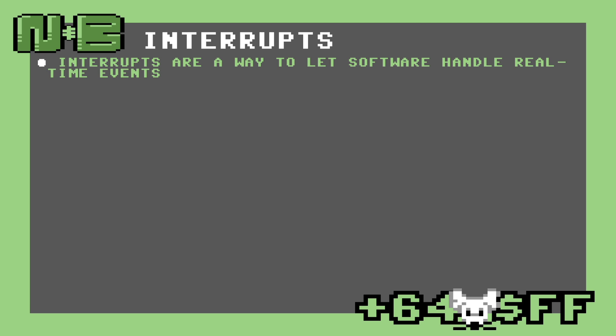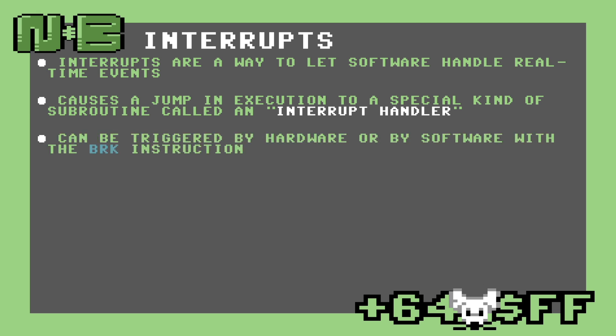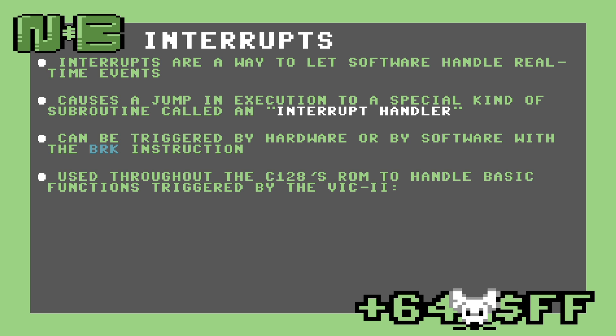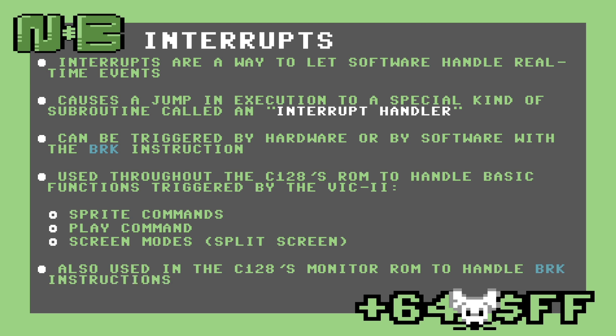Fundamentally, interrupts are a way to let software handle real-time events. Essentially, interrupts trigger a jump in execution to a special kind of subroutine called an interrupt handler. They can be triggered by both hardware and software. On the Commodore 128, they're used very heavily in the ROM to handle basic functions such as sprite commands, the play command, and the advanced split-screen modes. They're also used in the monitor ROM to handle BRK instructions.